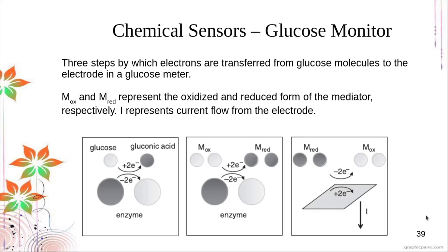Continuing our lecture on sensors in biomedical devices, we will talk about chemical sensors. A particular example is the glucose monitor or glucose sensor. The glucose sensor operates by a redox reaction between an enzyme and glucose. Glucose is oxidized by glucose oxidase, or in another system, reduced by glucose dehydrogenase.